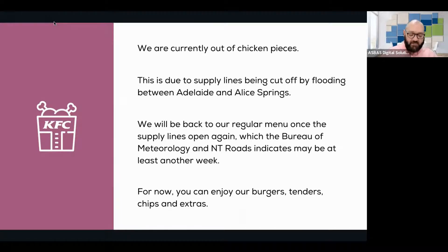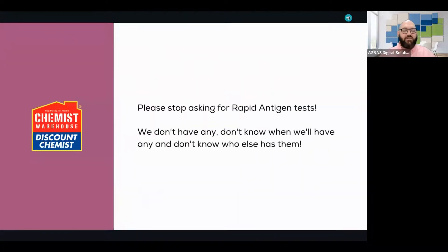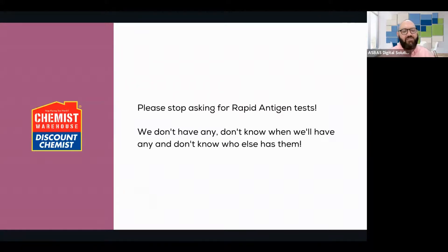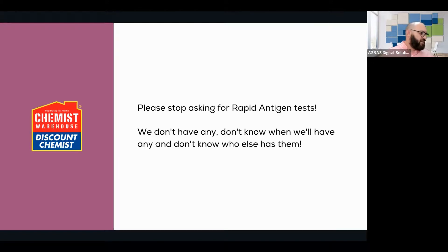Now I'm going to show the opposite with Chemist Warehouse. Inside a Queensland Chemist Warehouse, while rapid antigen tests were really, really rare, there was a sign saying: 'Please stop asking for rapid antigen tests. We don't have any. Don't know when we'll have any and don't know who else has them!' Whoa — aggressive. Someone's been having a bad day, or they're just sick of hearing the questions. That's probably where it came from.